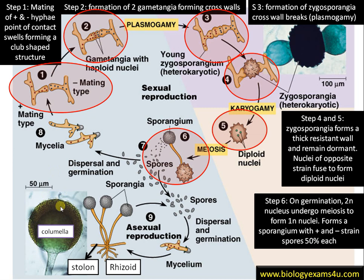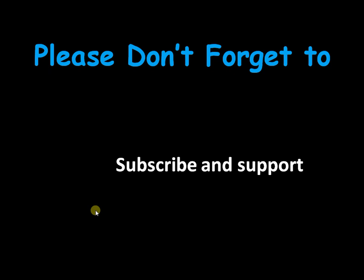Regarding the structure of this fungus, it has a horizontal structure called the stolon, and a rhizoid that penetrates into the substratum for attachment and absorption. From that point a sporangiophore arises, and a sporangium is formed at its tip. Spores are released and, being very minute, they can germinate very easily on falling on a suitable substratum.